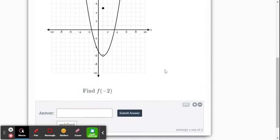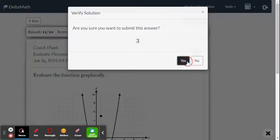This is evaluate this function for f of negative 2. So when x is negative 2, what's y? Looks like it's 3. So we're going to type in 3, submit the answer.